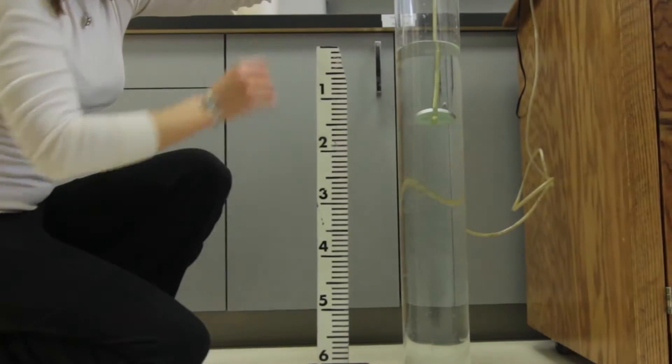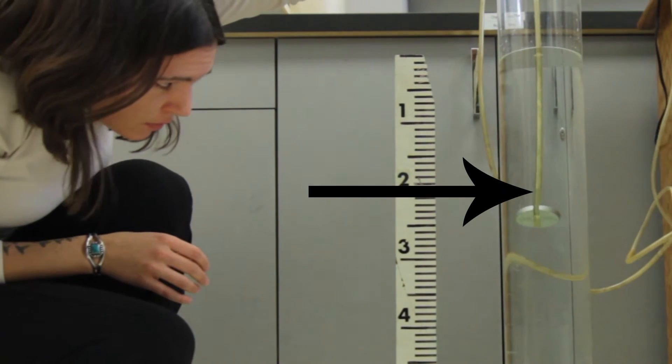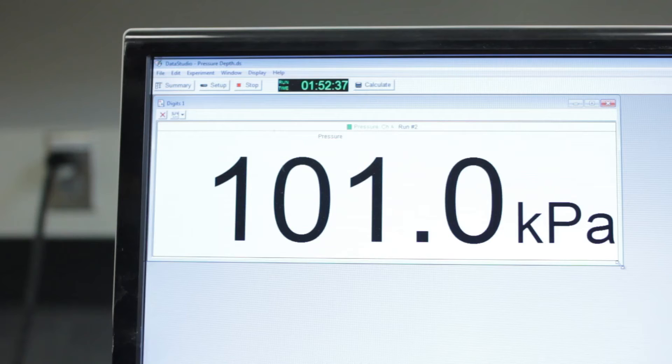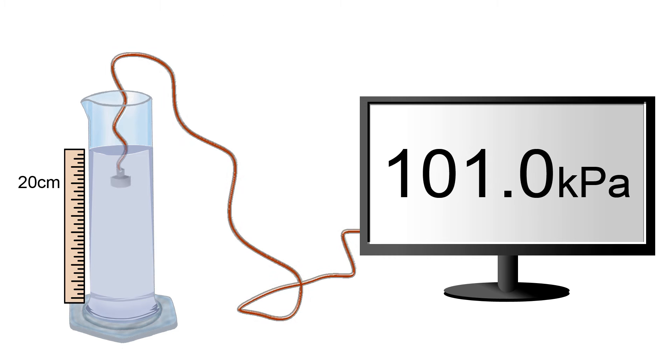If we lower the pressure sensor to a depth of 20 centimeters, 0.2 meters, below the surface of the water, we get a pressure reading of 101 kilopascals. So the pressure has increased 1.9 kilopascals over atmospheric pressure due to the weight of the overlying water.